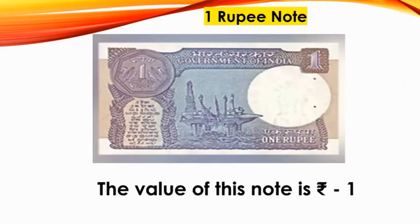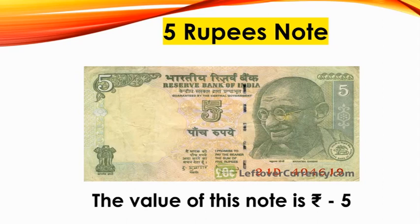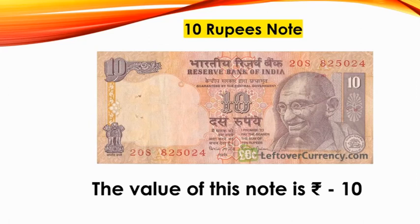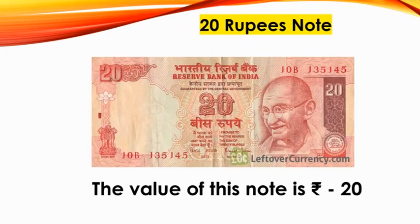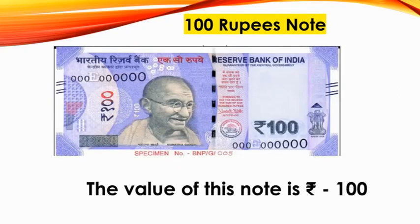Now we will see the types of currency notes. This is a 1 rupee note and the value of this note is rupees 1. This is a 2 rupees note and the value is rupees 2. This is a 5 rupees note and the value is rupees 5. This is a 10 rupees note and the value is rupees 10. This is a 20 rupees note and the value is rupees 20. This is a 50 rupees note and the value is rupees 50.